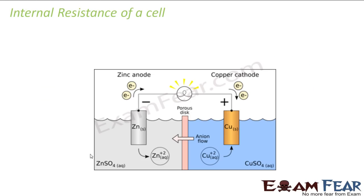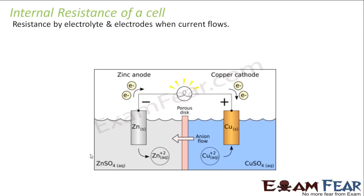Resistance is something which you are familiar with — it is a property which opposes the flow of current. Internal resistance means there is some resistance present internally within a cell. It is the resistance offered by the electrolyte and electrodes when current flows. So this electrolyte and these electrodes themselves try to oppose the flow of current, and that resistance is known as internal resistance.